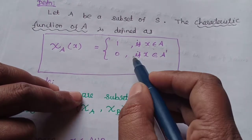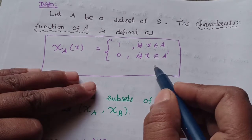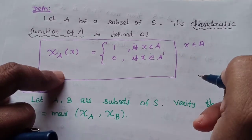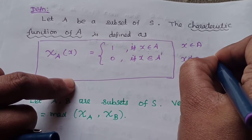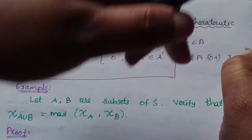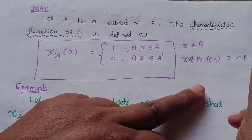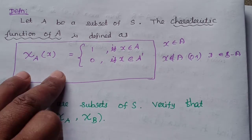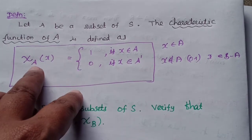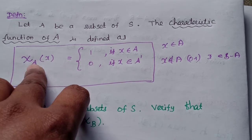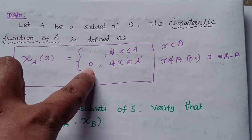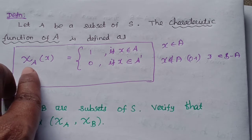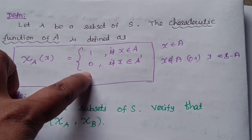The characteristic function of A assigns values as follows: if x belongs to A, the characteristic function value is 1. If x does not belong to A — that is, x belongs to the complement A', meaning x belongs to S minus A — the characteristic function value is 0.